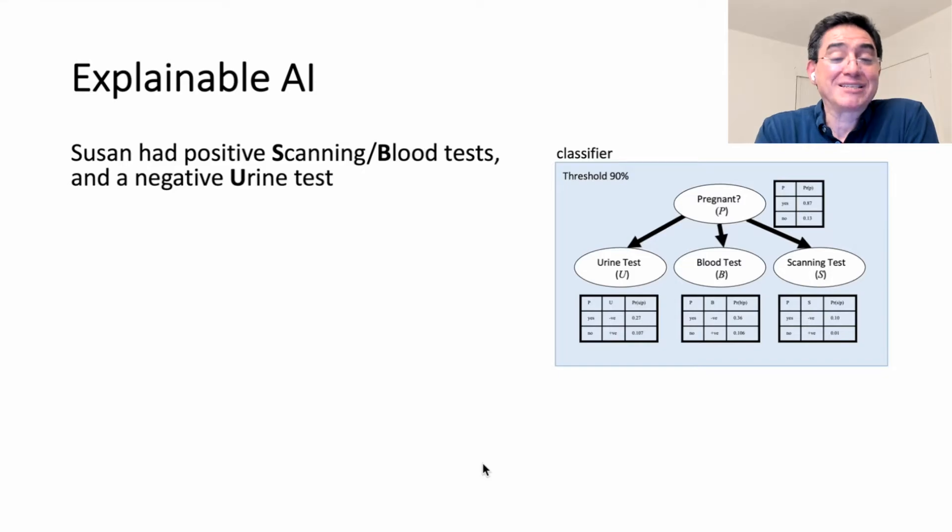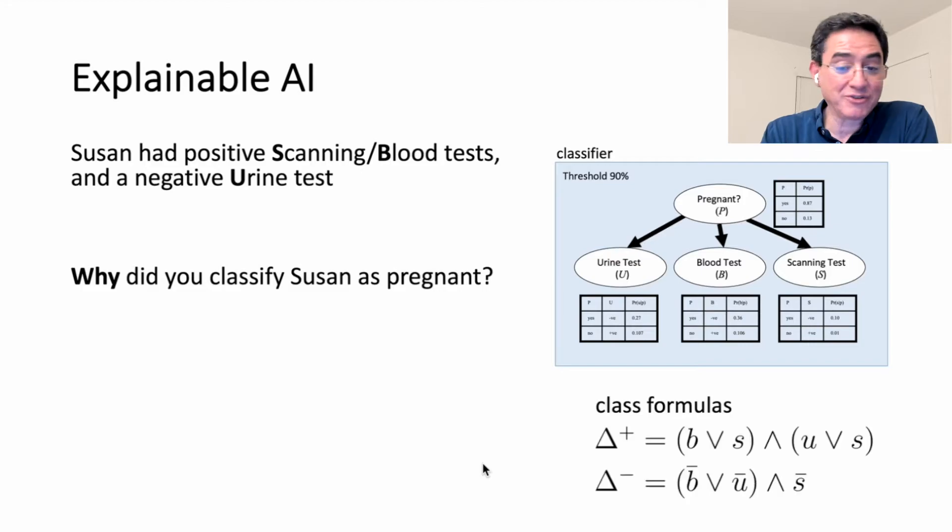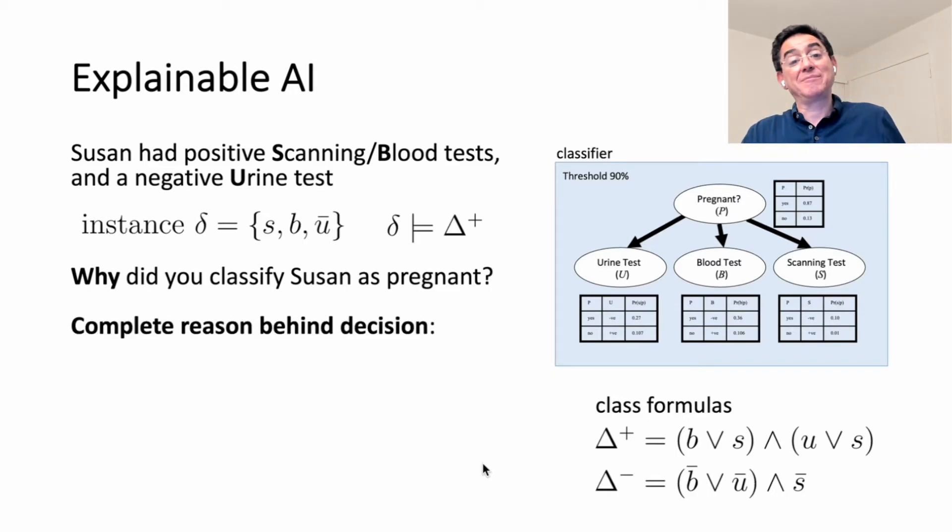Let's see it in action. We have the same classifier. We have an instance, Susan tested positive for scanning, blood and negative for urine. According to this classifier, she is pregnant. So now we want to know why is Susan pregnant? We can answer this question using quantification. We're not going to use the classifier. We're going to use the formulas that represent the classifier. This is our instance. It corresponds to three variable settings. It does satisfy the positive formula.